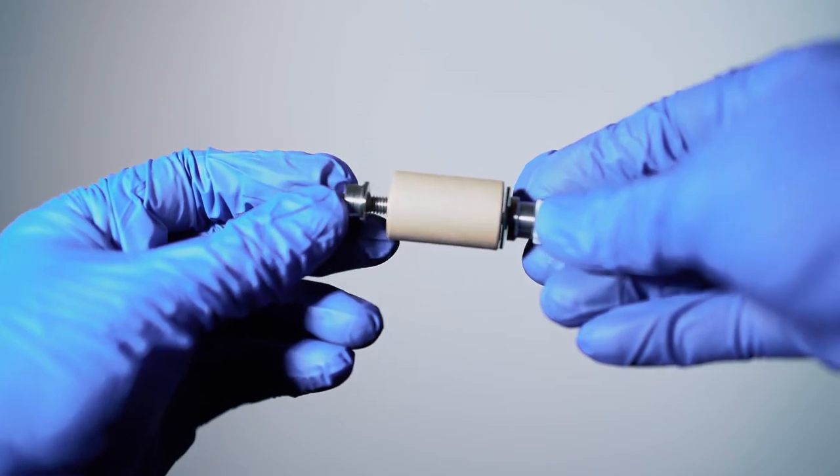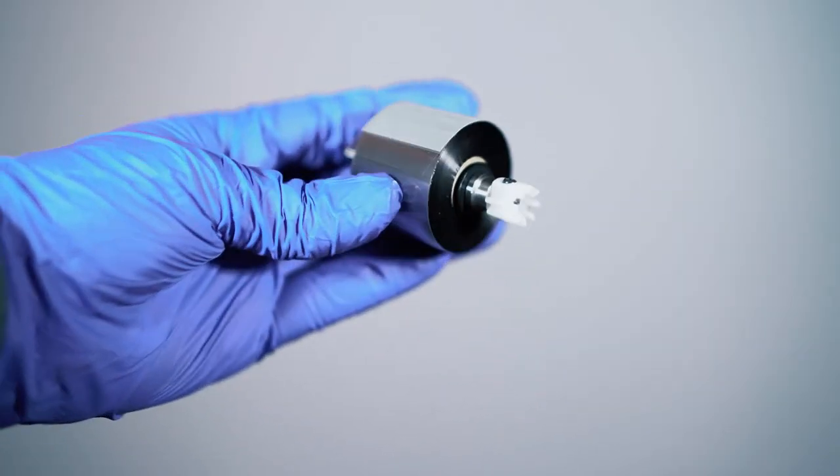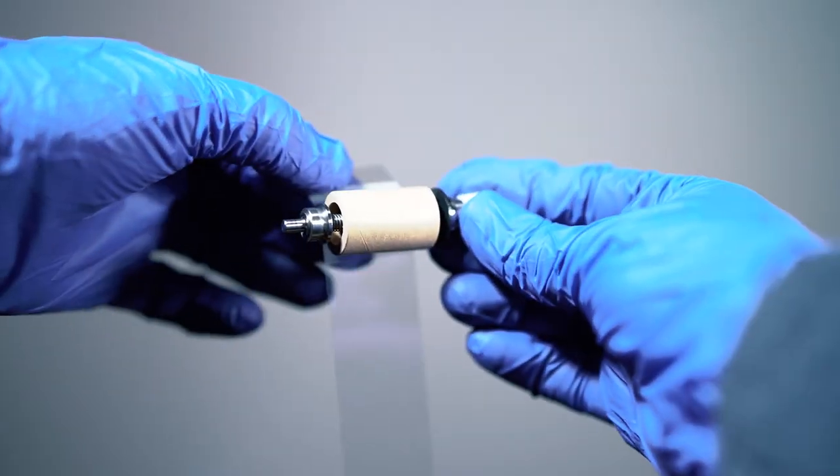Insert the spool holders firmly into the empty cardboard take-up spool and new ribbon core. Unwind the ribbon and attach the clear adhesive end to the take-up spool.